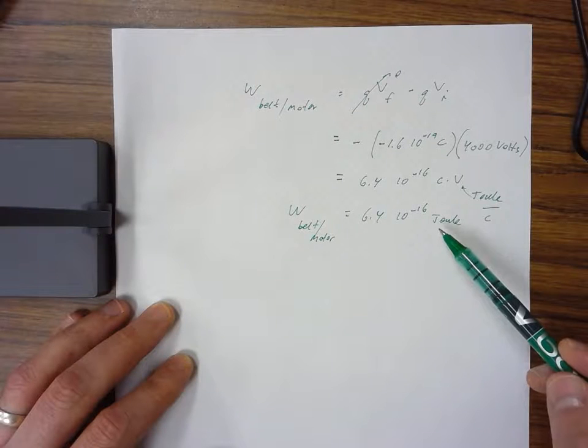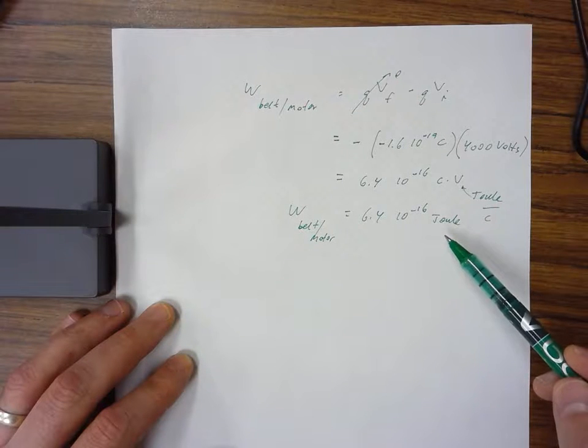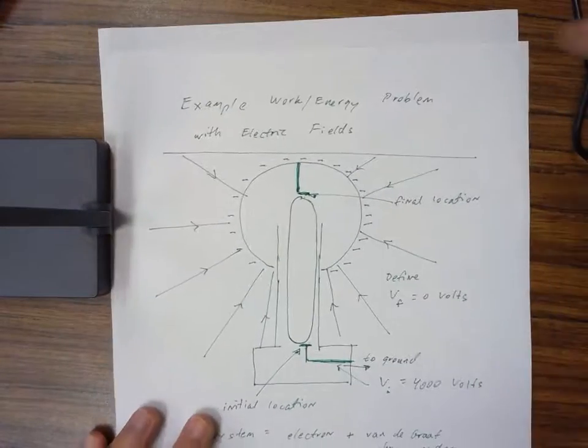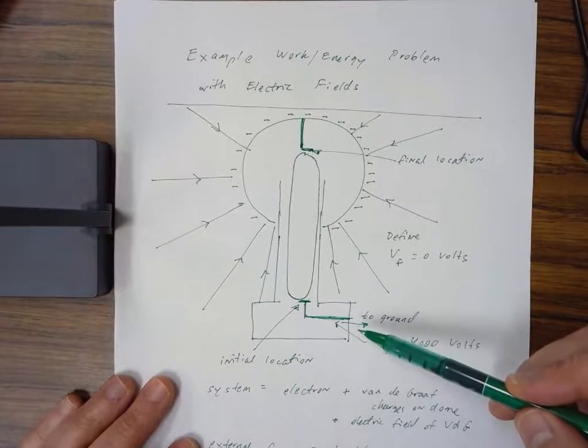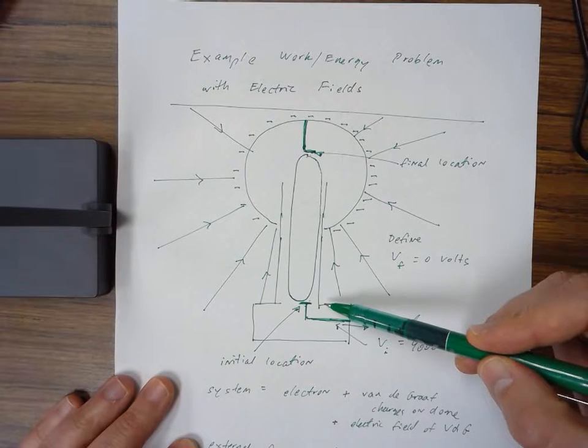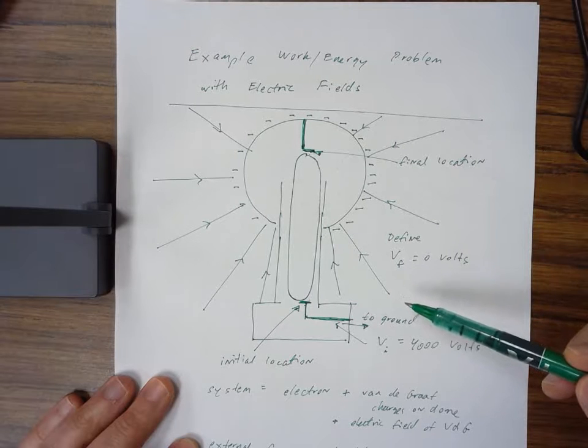Just like lifting a box to a higher point in the gravitational field requires positive work, in this problem we've lifted an electron. But since an electron has negative charge, we have to do positive work to lift it to a lower place in the electric field.